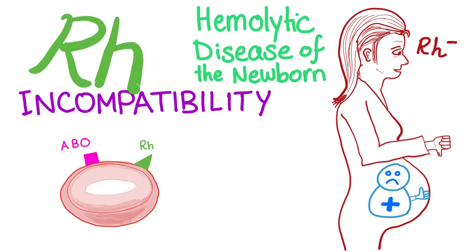Medicosis Perfectionalis here, and we continue our topics on hematology and oncology. In the previous video we discussed ABO incompatibility, the most common cause of hemolytic disease of the newborn. Today's topic is RH incompatibility, also a cause of hemolytic disease of the newborn, which we call erythroblastosis fetalis — and we will learn why.